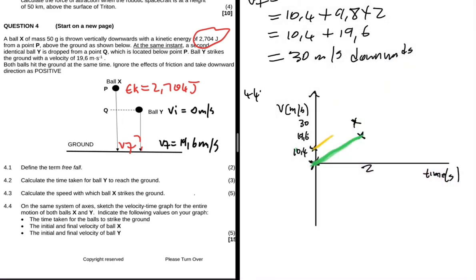If we would sketch a graph for ball Y, we'd have something like this. The two lines have to be parallel, and they have to all be at 2 with regards to the time. That's the v-t graph you would get. You would label this is your X and this is your Y.